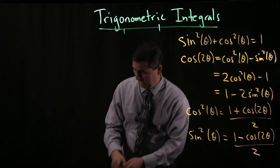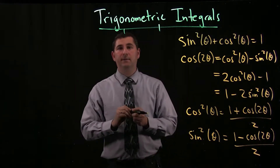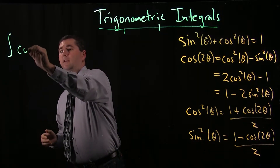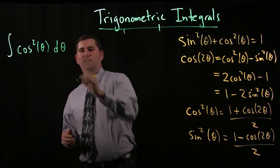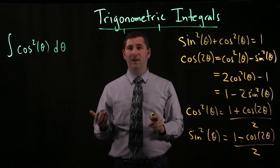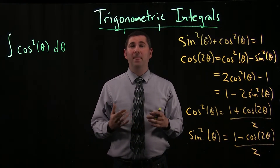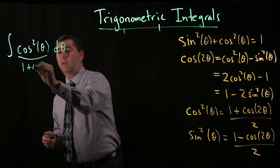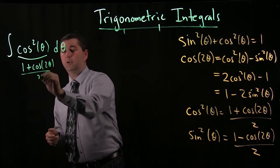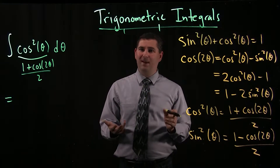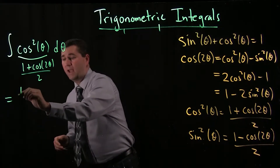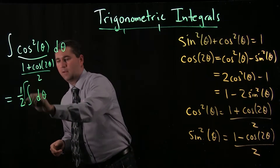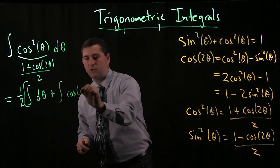Let's see how we can use that. Let's say I wanted to find an antiderivative for cosine squared. We already did this one in the integration by parts video, right? We had to use that special I-trick — that was pretty neat. We're going to see it works out a lot simpler here if we use this identity. If I replace cosine squared with one plus cosine two theta over two, the over two I can just pull out as a constant. So I have one half times the antiderivative of one d theta plus the antiderivative of cosine two theta d theta.